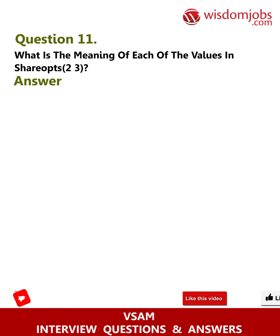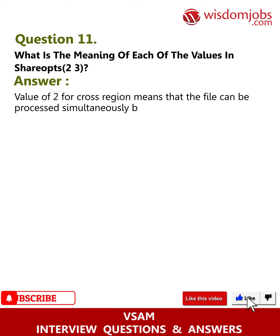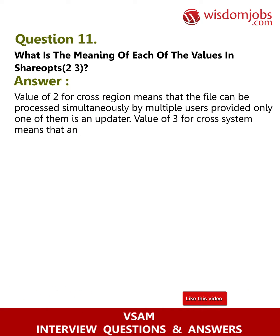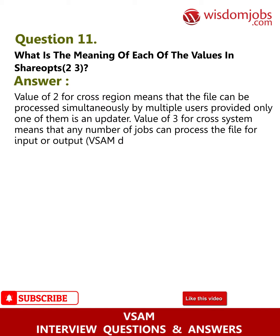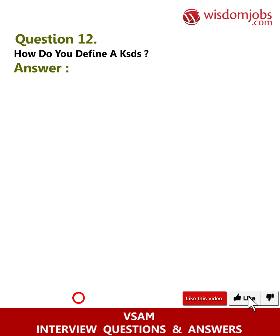Question 11: What is the meaning of each of the values in SHAREOPTIONS (2, 3)? Answer: A value of 2 for cross-region means that the file can be processed simultaneously by multiple users, provided only one of them is an updater. A value of 3 for cross-system means that any number of jobs can process the file for input or output, and VSAM does nothing to ensure integrity.